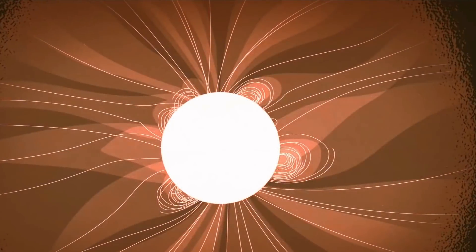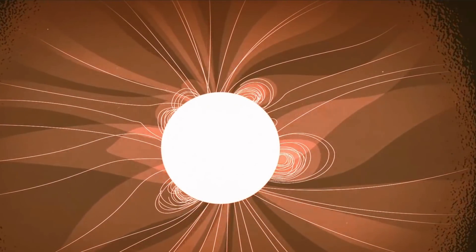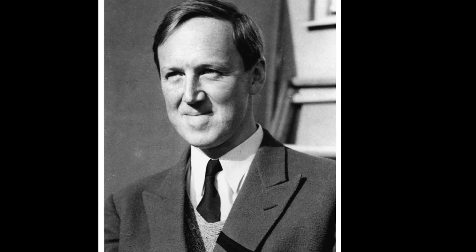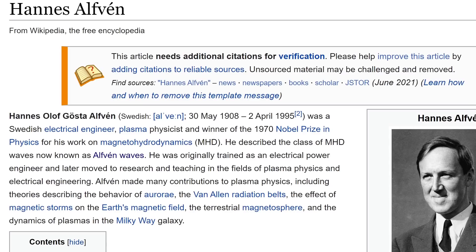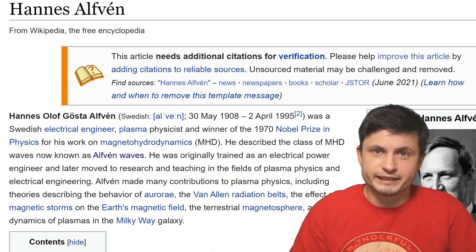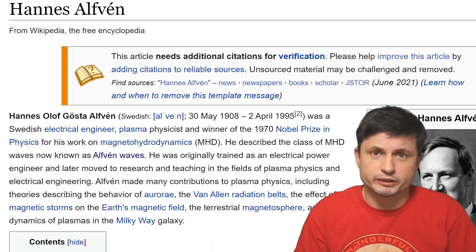This particular region today has a name—it's known as the Alfvén point, named after Hannes Alfvén, the Swedish electrical engineer and Nobel Prize winner who essentially defined the ideas behind Alfvén waves and explained a lot of phenomena in plasma physics as well.